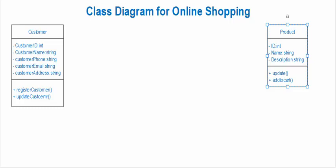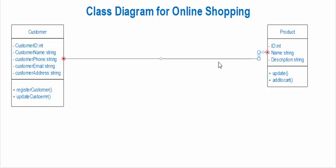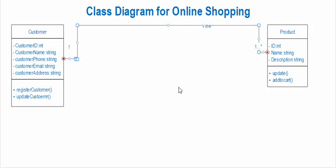A customer can view products, so let's create that relationship. We'll draw a one-to-many relationship between customer and product, meaning a customer can view one or more products.